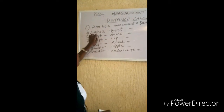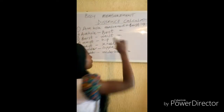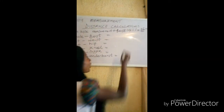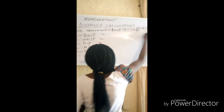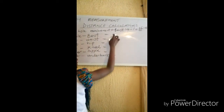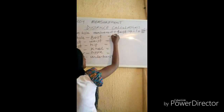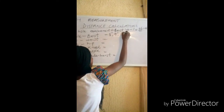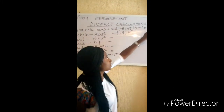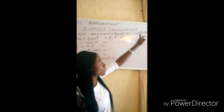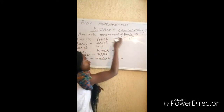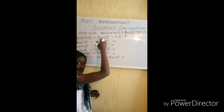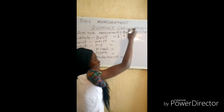From the armhole to the bust, if you are using 36 as the bust measurement, under your 8 inches you are going to mark your bust measurement. The distance varies between 8 inches to 9 to 10 inches depending on the bust measurement. If you have a lesser bust, the distance between the armhole and the bust is going to be less. If you have a bigger bust, it's going to increase.